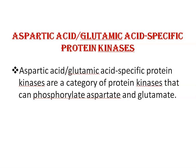The last type of protein kinases is aspartic acid/glutamic acid-specific protein kinases, a category of protein kinases that can phosphorylate aspartic acid and glutamate. That covers the structure, types, and function of protein kinases. If you have any questions, please write them in the comment section.